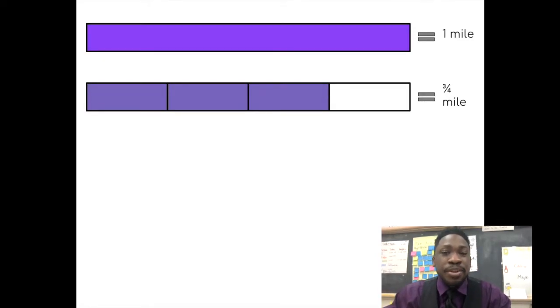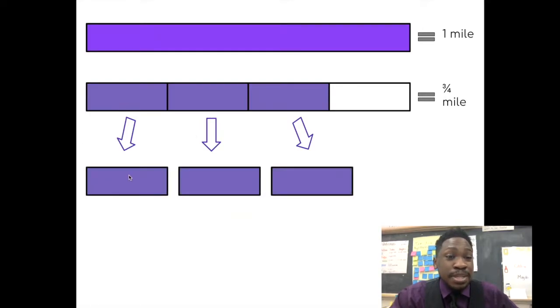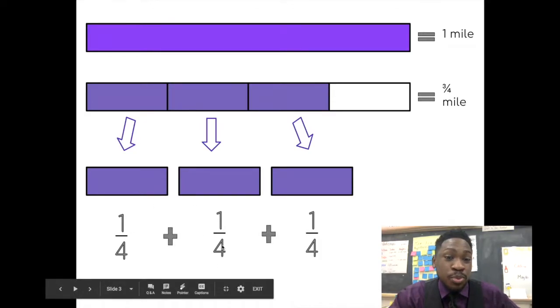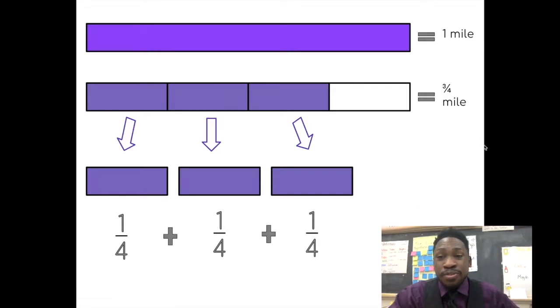Now I can decompose three-fourths into smaller parts. If I take each of these parts and break them down into what they are individually, that means each of these pieces are one-fourth. So I could say that one-fourth plus one-fourth plus one-fourth equals three-fourths. I just decomposed three-fourths into one-fourth plus one-fourth plus one-fourth.